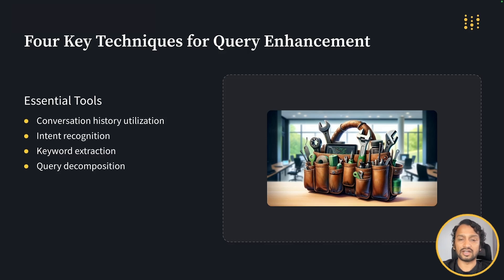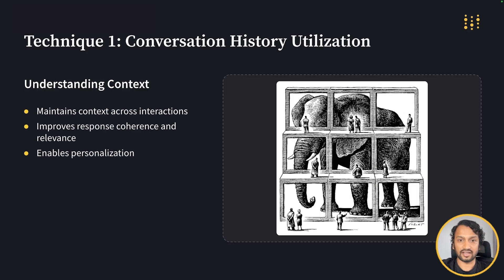These tools allow your RAG system to go from just seeing user words to truly understanding what the users are asking for. Let's dive into our first technique: utilizing conversation history. Imagine trying to understand a movie by only watching five random five-minute clips — frustrating, right? That's what it's like for a RAG system to try to understand queries without context.